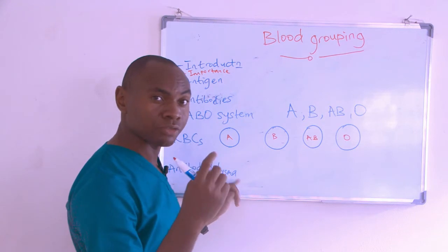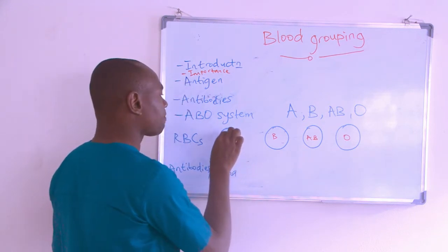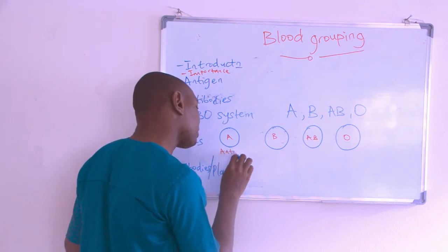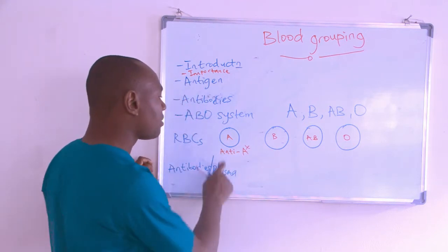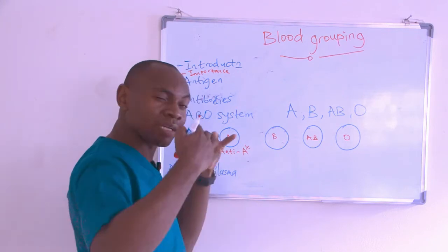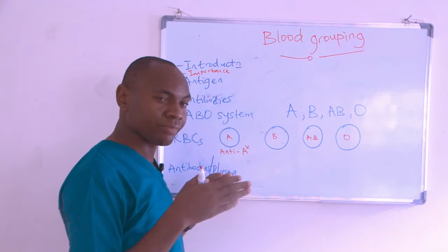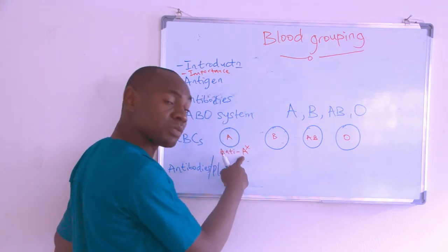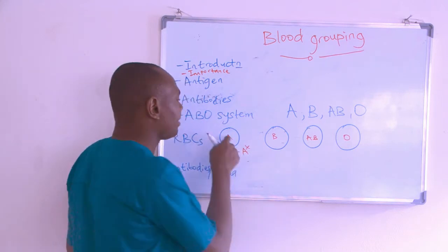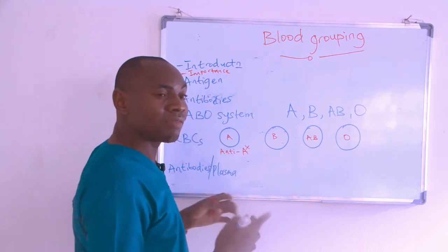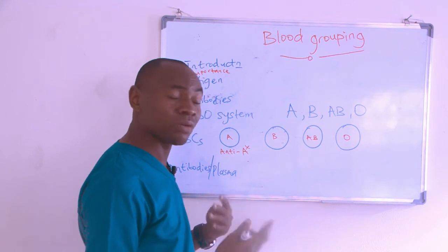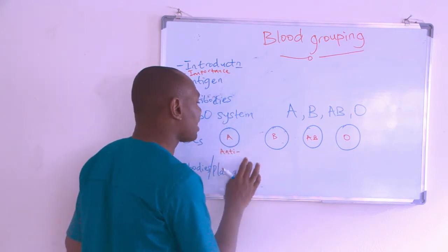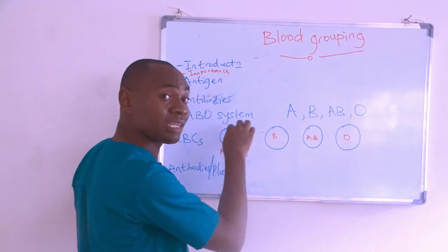Now where do antibodies come into play? Antibodies are found in the plasma. In blood group A, which has antigen A, we are not going to have antibody A. We can't have antibody A because antibodies are fighters — like an army — naturally made for a particular antigen. If antigen A and antibody A were both present, the antibody would immediately attack and destroy the red blood cells, causing a blood exchange reaction called agglutination. So naturally, someone with antigen A will have antibody B.